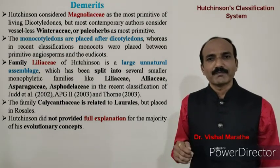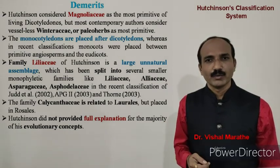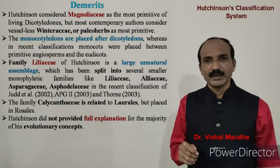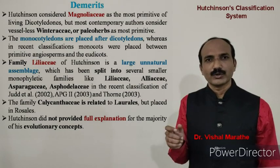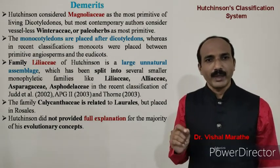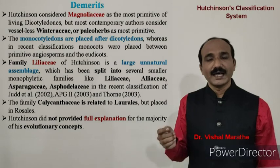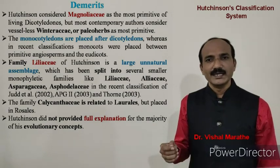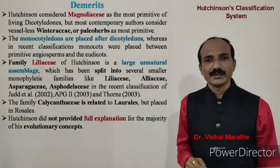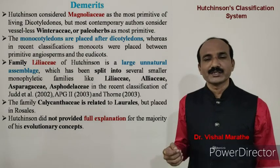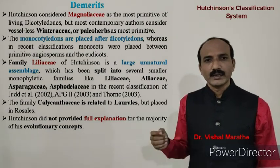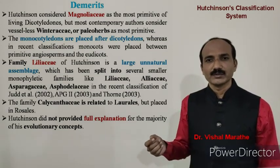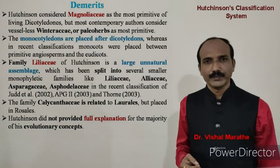Hutchinson considered Magnoliaceae as the most primitive family of living dicots, but most contemporary authors consider vessel-less Winteraceae or paleoherbs to be the most primitive. Monocots are placed after dicots, whereas in recent classifications, monocots are placed between primitive angiosperms and eudicots, making the placement of monocots somewhat incorrect. Family Liliaceae of Hutchinson is a large unnatural assemblage which has been split into several smaller monophyletic families like Liliaceae, Alliaceae, Asparagaceae, in recent classifications by Judd et al. (2002), APG II (2003), and Thorne's classification (2003).